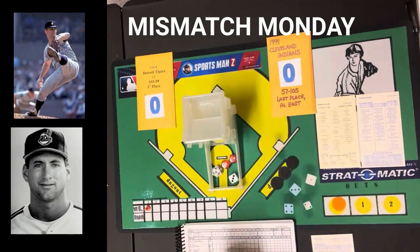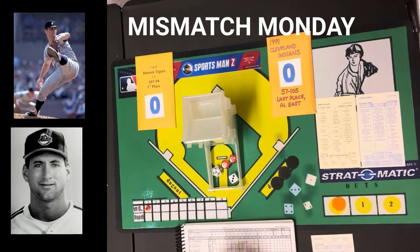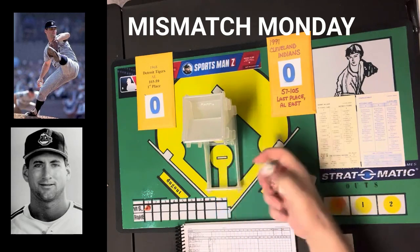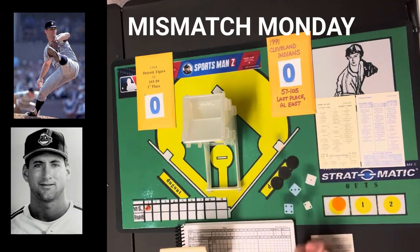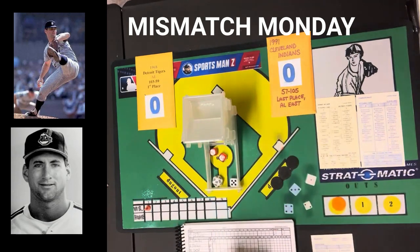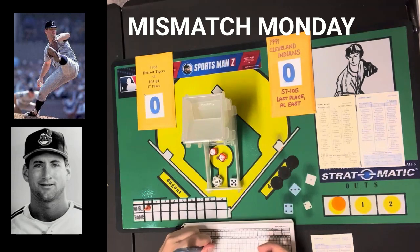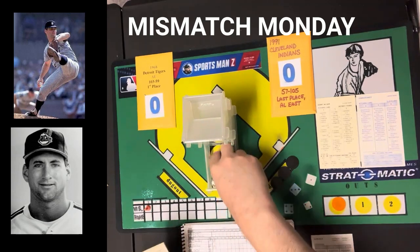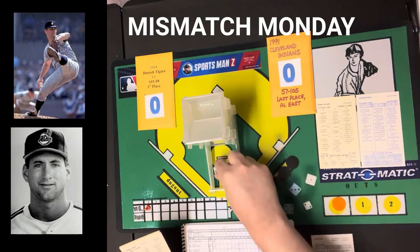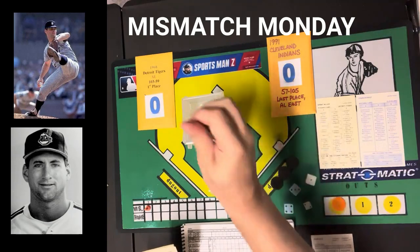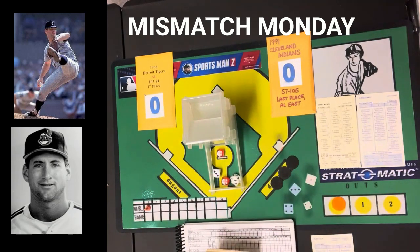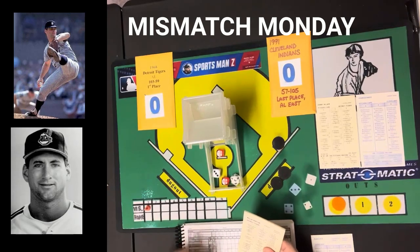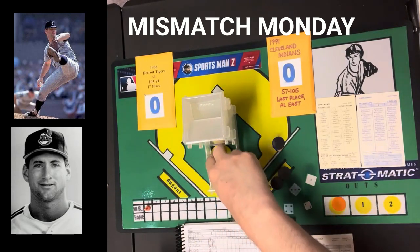Mickey Stanley leads off with a fly ball to center — out. Al Kaline gets a 5-8, fly ball to right — out. Norm Cash gets a 3-8, which is a walk, putting the first base runner on against Nagy. Willie Horton, who had 36 home runs in 512 at-bats that year, gets a single. That's the first base hit Nagy has allowed.